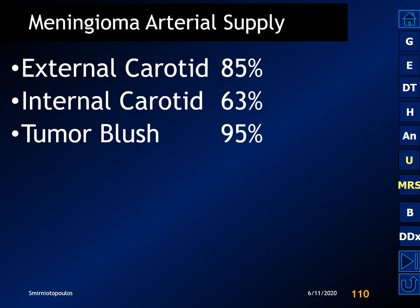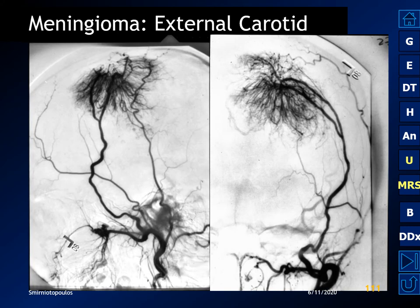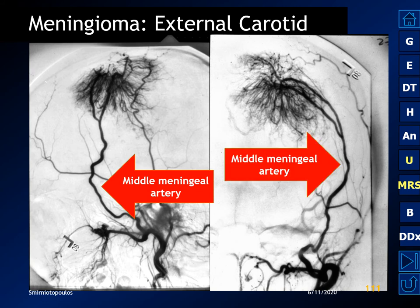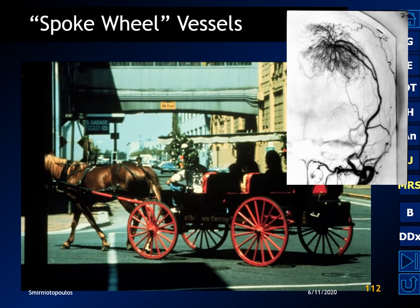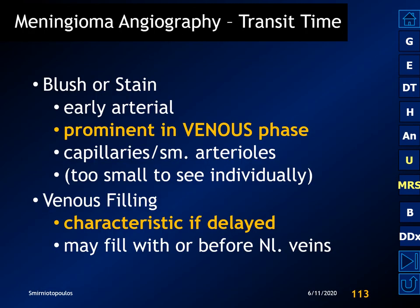Most meningiomas are supplied by branches of the external carotid artery, and the tumor almost always has a distinctive and easily visible tumor blush. Classic angiographic appearance shows a dilated middle meningeal artery and a radial or spokewheel arrangement of small vessels within the tumor. This spokewheel vascular pattern is highly characteristic for meningiomas. What is most distinctive is a prolonged mean transit time and delayed opacification of the draining veins — very different from most hypervascular tumors.